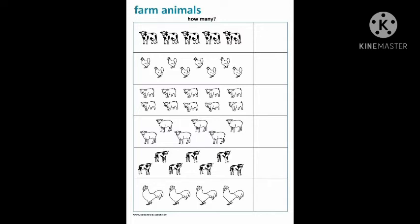In the first row you can see lots of cows. So first we will count the cows. Let's count with me: 1, 2, 3, 4, 5. We have 5 cows. So we will write the number 5.